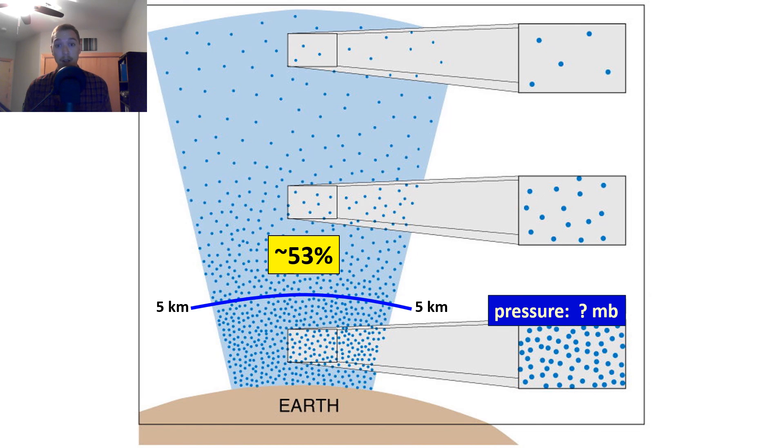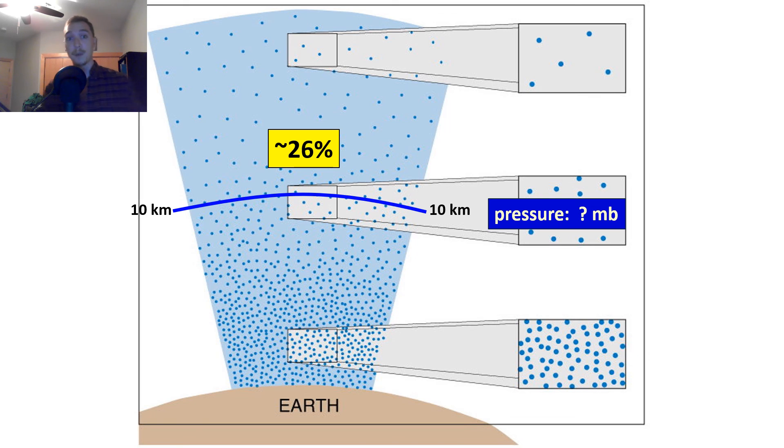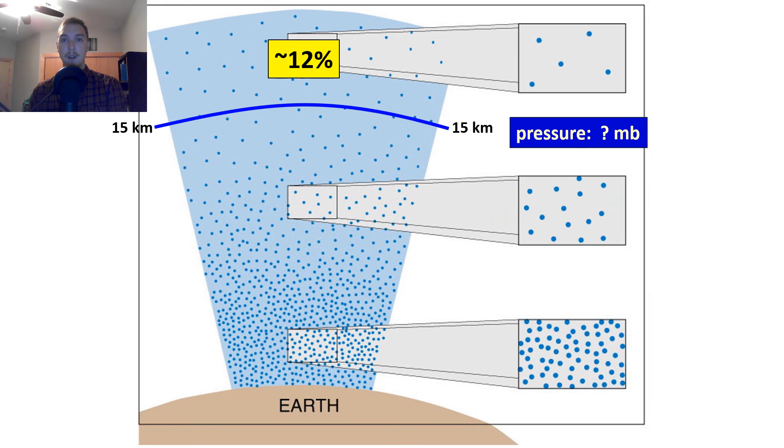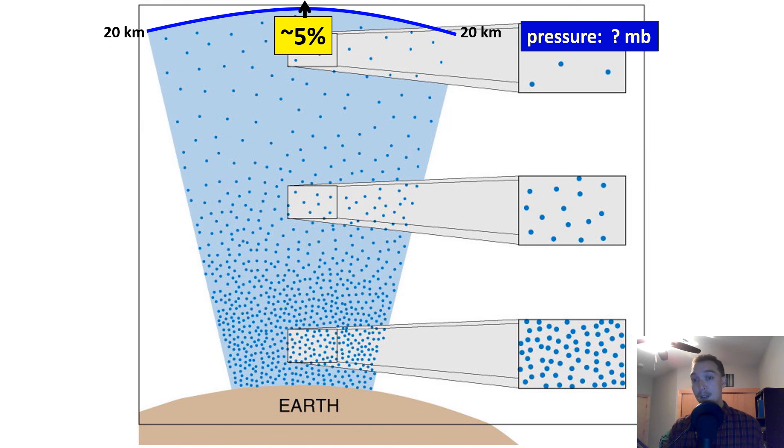The pressure at sea level is 1,013.25 millibars, at 100% the pressure of the atmosphere. If we know that it's 1,013.25 millibars, we can multiply by 0.53 to get our pressure at 5 kilometers, which is roughly 540 millibars. At 10 kilometers, we're only experiencing about 26% of the atmospheric pressure, or 264 millibars. At 15 kilometers, we're only at 12% of the atmospheric pressure, or 120 millibars. And at 20 kilometers, about 55 millibars.